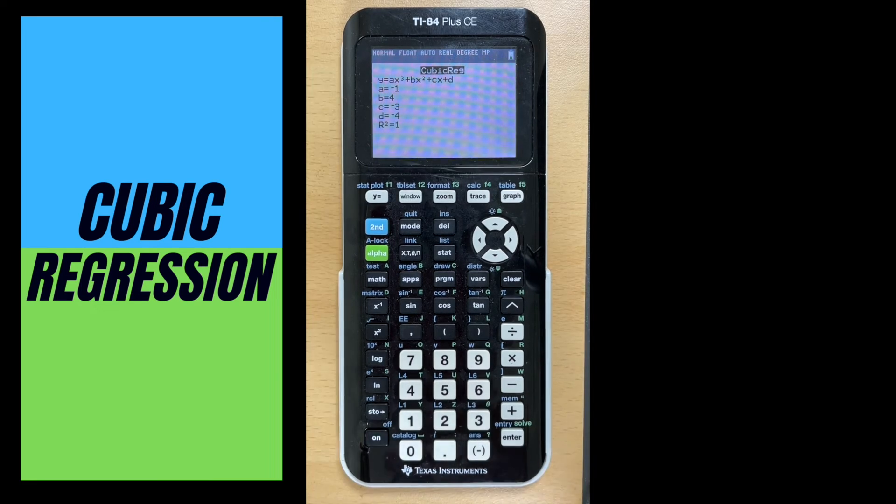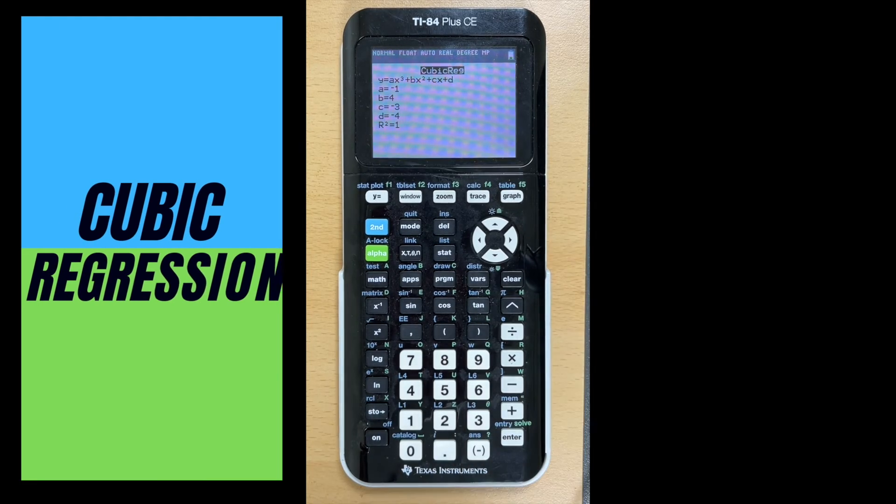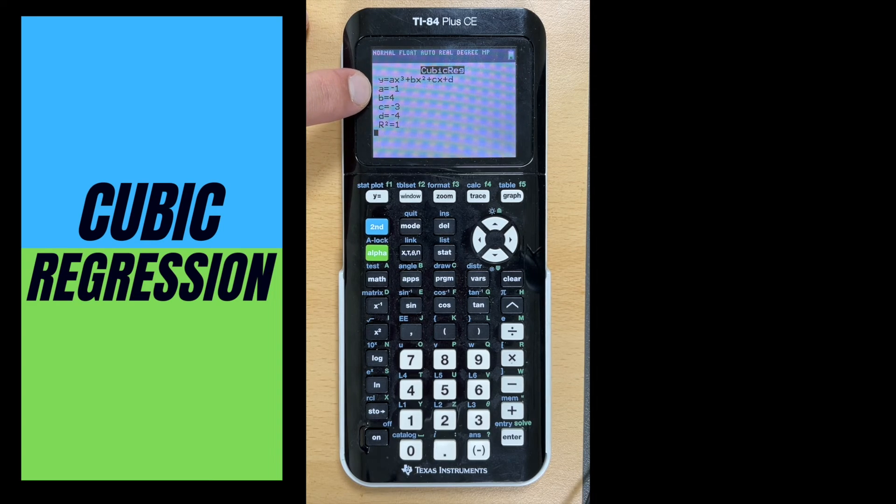It tells us that my equation would be y equals negative x cubed plus 4x squared minus 3x minus 4.